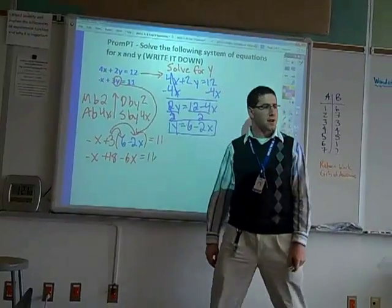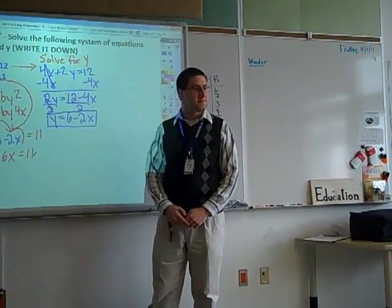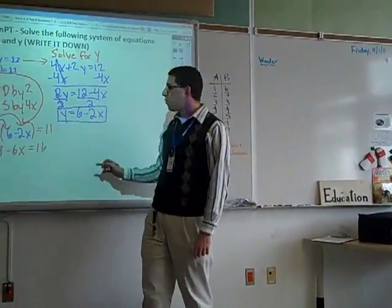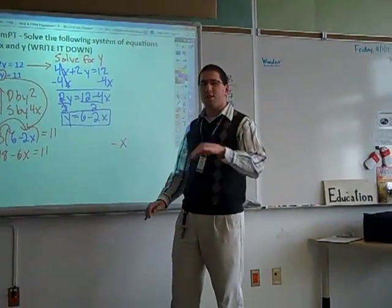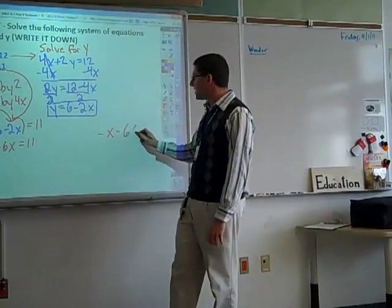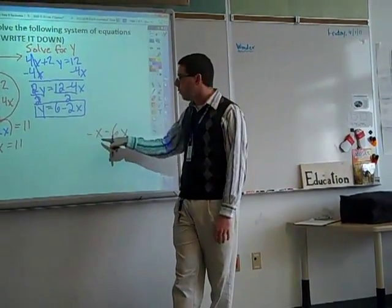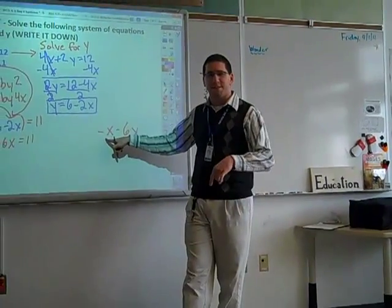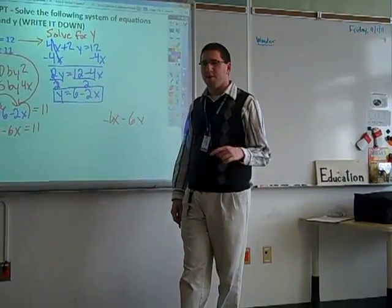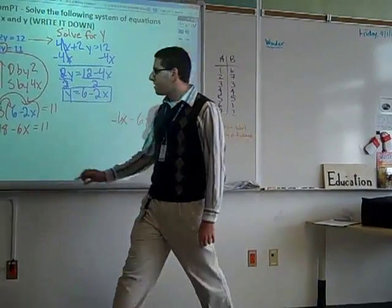Why negative 7, not negative 5? When you add two negative x's, you get a negative negative x. What's that number in front of the x? It's invisible, but important. Negative 1 minus 6 equals negative 7.